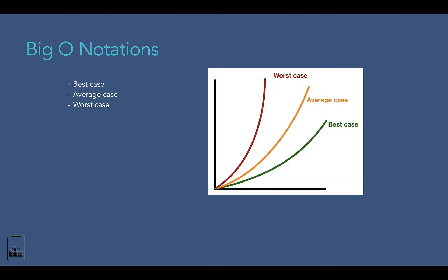For an algorithm, it might take one minute to execute in the worst case scenario. But in the best case scenario, it might take five seconds to execute. And finally, in the average case scenario, it might take 30 or 35 seconds to execute. With the help of these notations, we can define the best, worst, and average case of an algorithm.